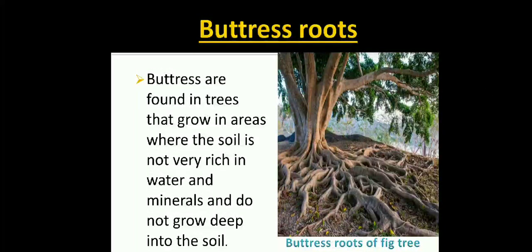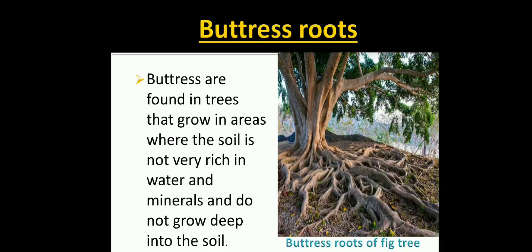Buttress roots are found in trees that grow in areas where the soil is not very rich in water and minerals and do not grow deep into the soil. As the tree grows bigger and taller, their roots cannot provide enough support to the tree to stand straight. Therefore, buttress roots grow from the trunk of the tree, sticking out at the base on top of the ground to provide additional support. Example: buttress roots of a fig tree.